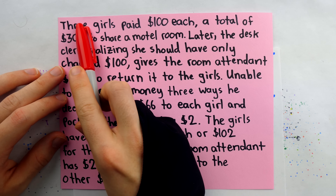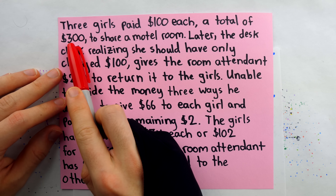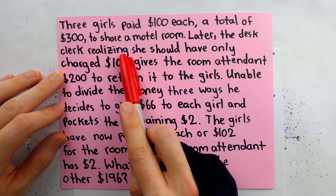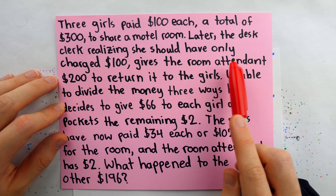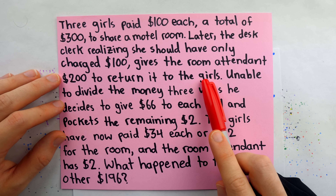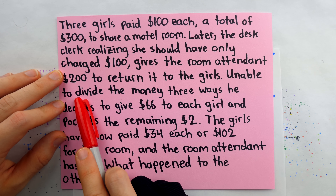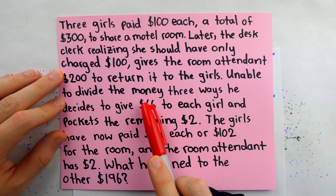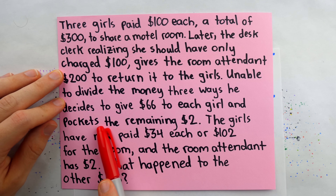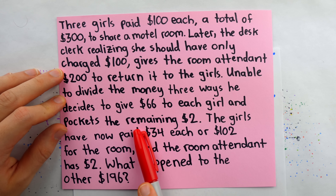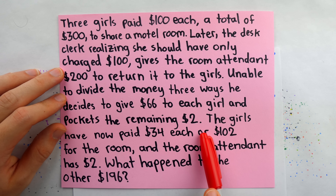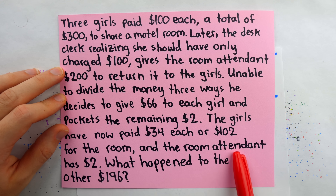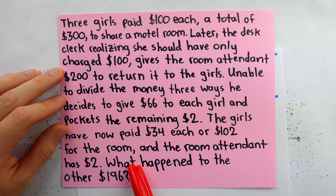Say for example, just as before, the three girls paid $100 each, a total of $300, and later the desk clerk realizes she should have only charged $100, and so gives the room attendant $200 back to return to the girls. Again, the room attendant is unable to divide the money three ways, so he decides to give $66 to each girl, and pockets the remaining $2. The girls have now paid $34 each, or $102 total, for the room, and the room attendant has $2. What happened to the other $196?